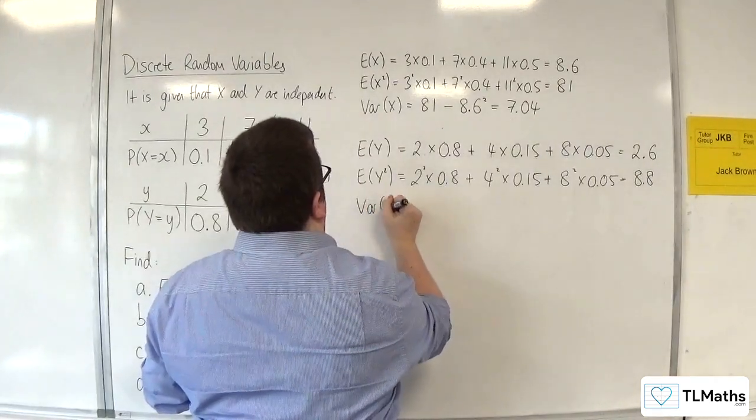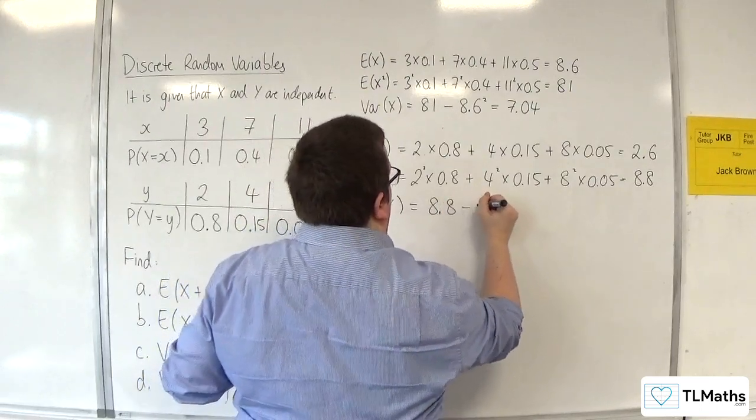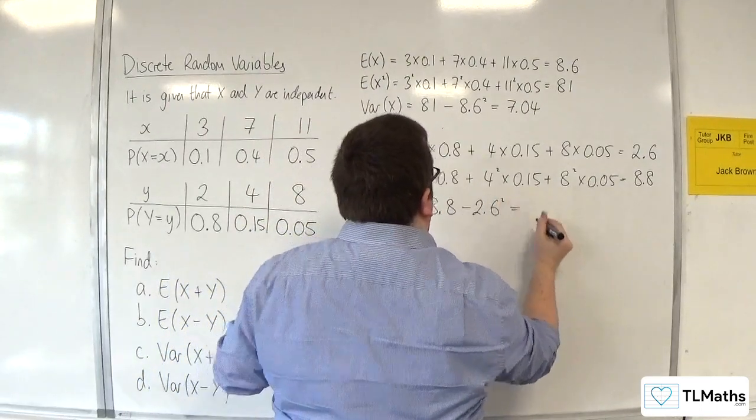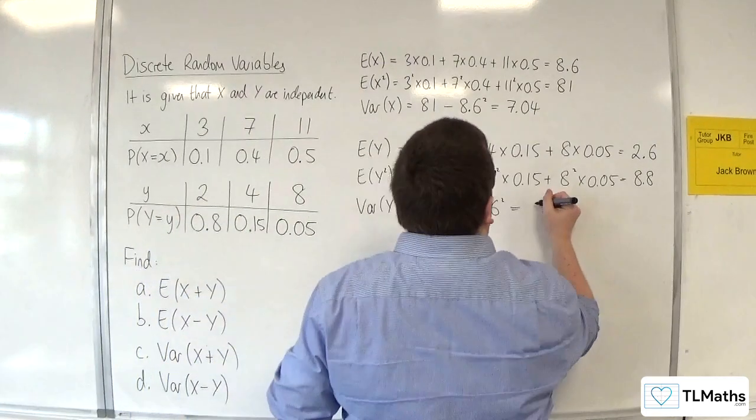So Var of Y is equal to 8.8 take away 2.6 squared. So that's 2.04.